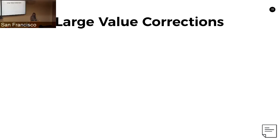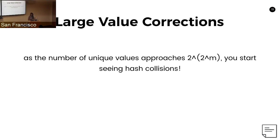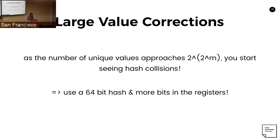This algorithm is also biased at very large values. As the number of unique values approaches a very large number, you start seeing hash collisions. To make up for this, you can do some bias correction, but it mostly makes more sense to use a larger hash and more bits in the registers, so you can count more zeros and have fewer collisions.